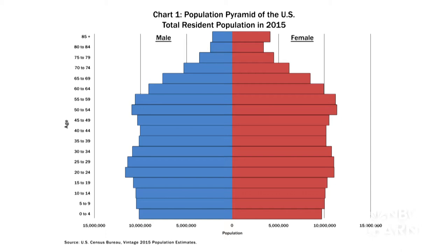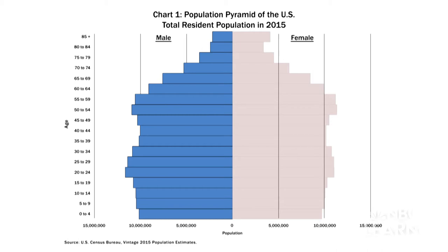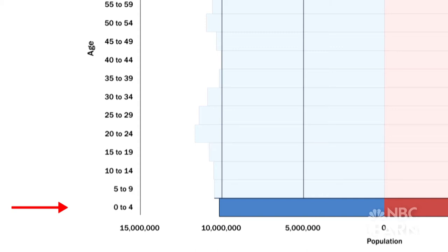Each of these bars going across shows a particular age group. So the lowest bar is children ages 0 to 4, the next bar is 5 to 9, and so on, up to the top bar which is 85 and over.